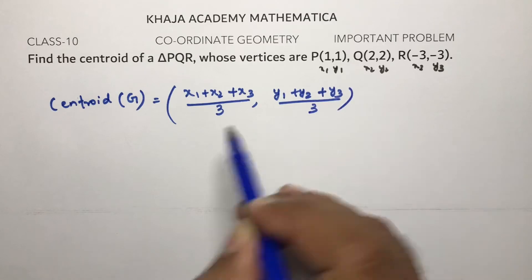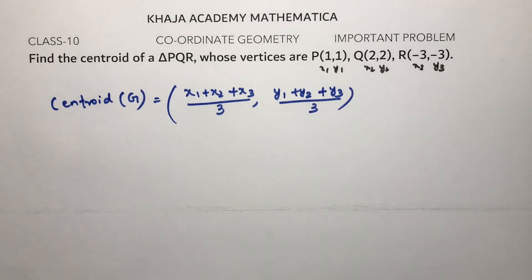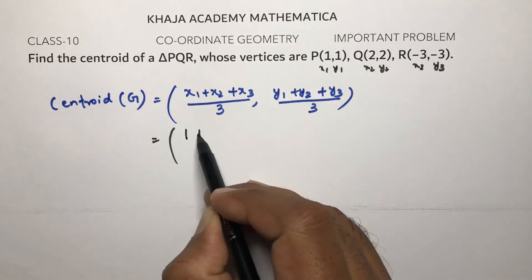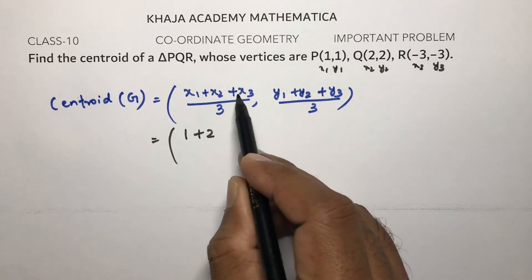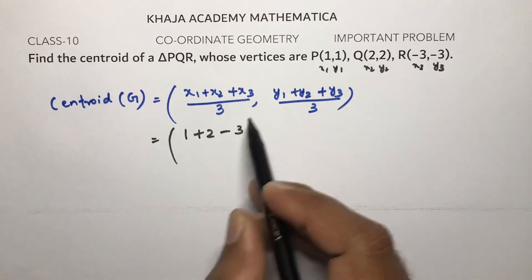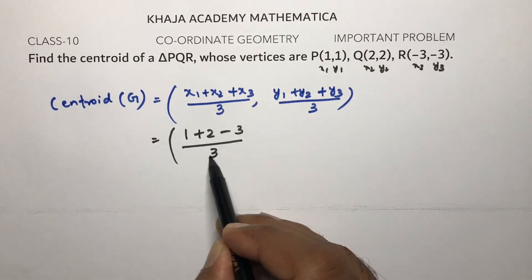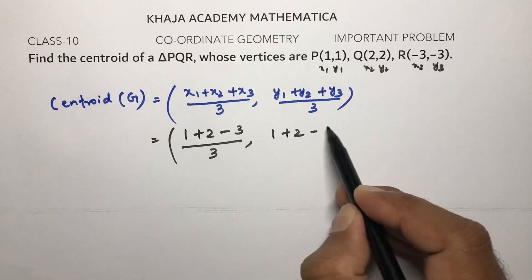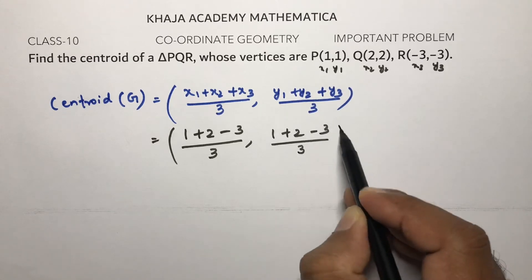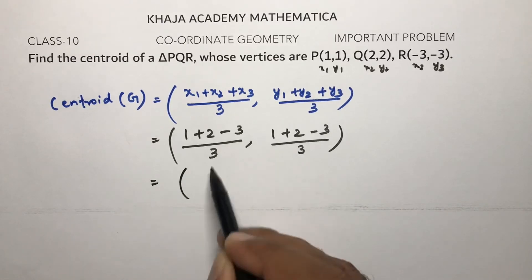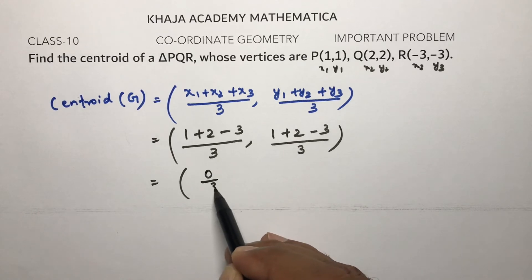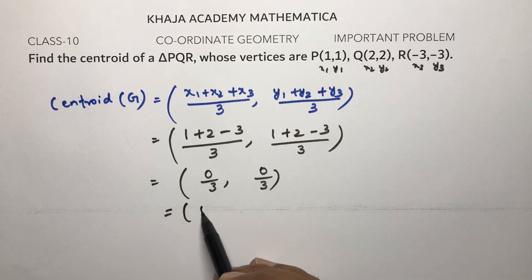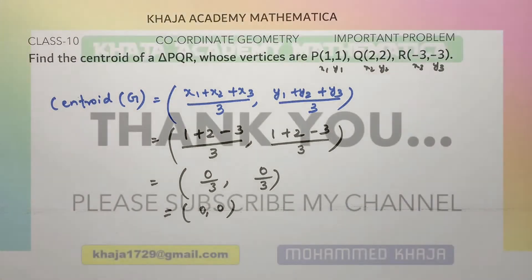Substituting the values: for the x-coordinate, 1+2+(-3) = 0, so 0/3. For the y-coordinate, 2+(-3)+1 = 0, so 0/3. Therefore, the centroid G is (0, 0).